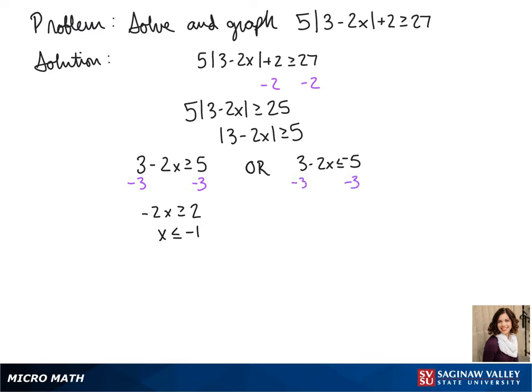Again, we subtract 3 from both sides. We divide both sides by negative 2. So our possible values of x could be less than or equal to negative 1 or greater than or equal to 4.